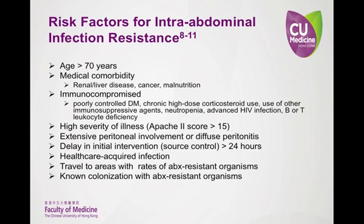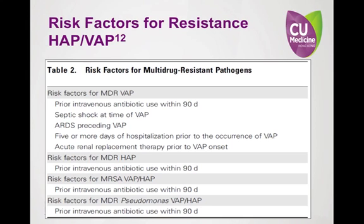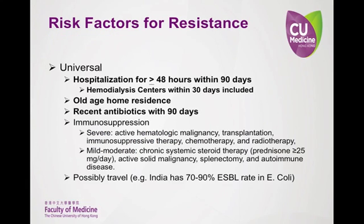The last area to discuss is what are the risk factors for resistance — when would you consider a more broad-spectrum empiric selection for patients presenting to the A&E? Many of these risk factors are infection site specific. The risk factors for a resistant intra-abdominal infection include some specific ones regarding peritonitis, having cancer, elderly age, or being malnourished. Some risk factors are considered more universal regardless of infection site, including the main three: recent hospitalization, old-age home residence, and recent antibiotic use.